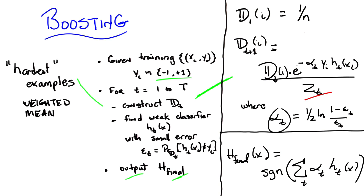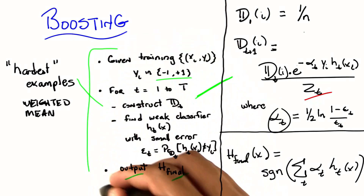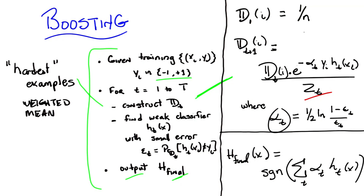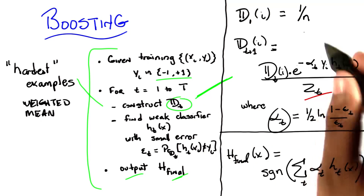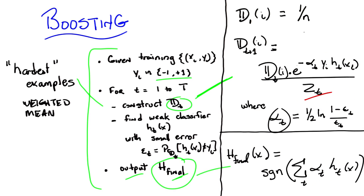Okay, so this is boosting. There's really nothing else to it. You have a very simple algorithm which can be written down in a couple of lines. The hardest parts are constructing the distribution, which I show you how to do over here, and then simply bringing everything together, which I show you how to do over here.